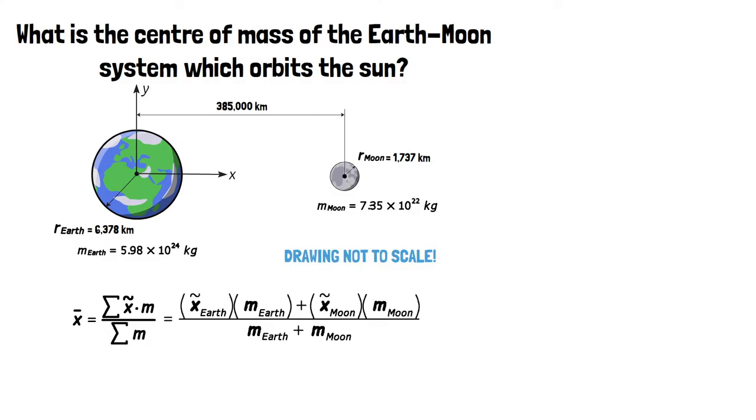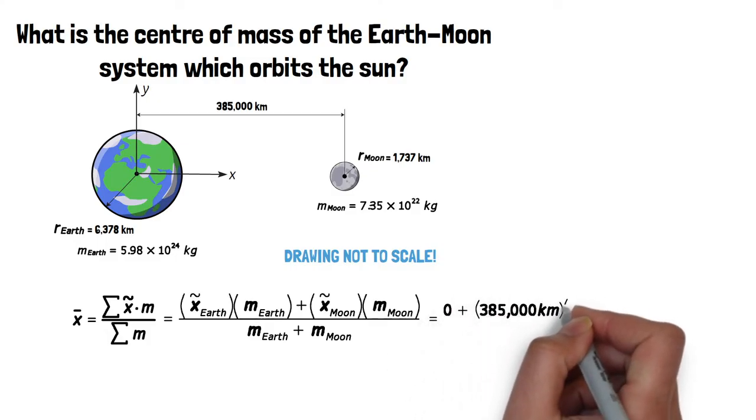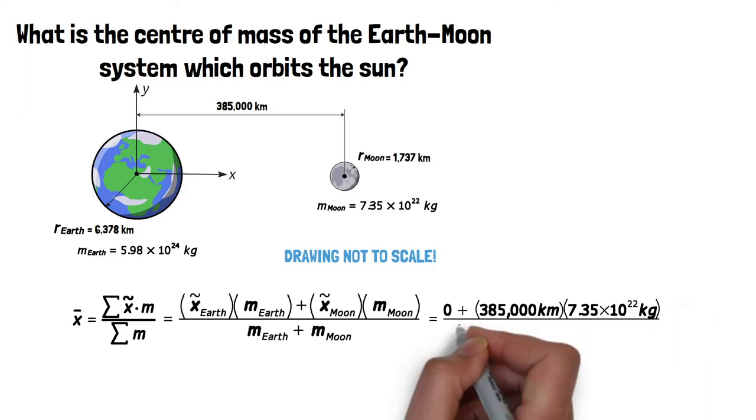Since our coordinate frame is centered on the Earth, its contribution to the numerator becomes zero and we can fill in the appropriate masses and distances from above.